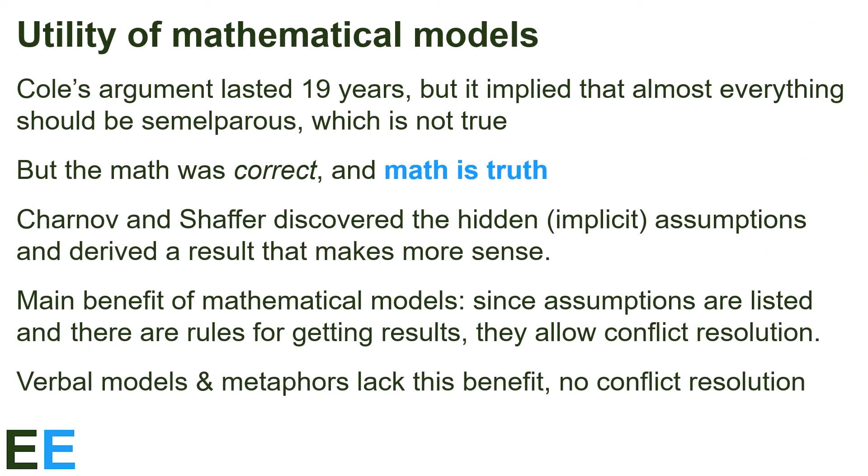To recap, Cole's argument lasted 19 years, but it implied that almost everything should be semelparous, which is not true. But the math was correct and math is truth. Charnov and Schaffer discovered the hidden, or implicit, assumptions and derived a result that makes more sense.